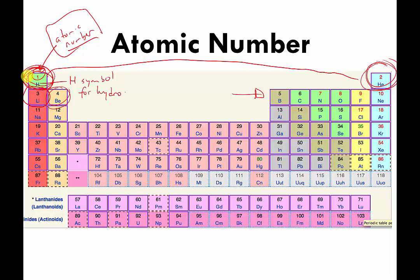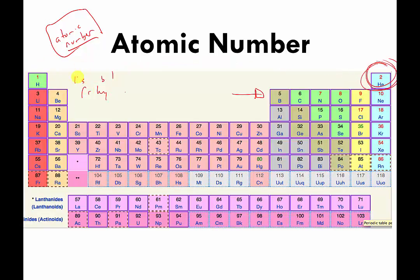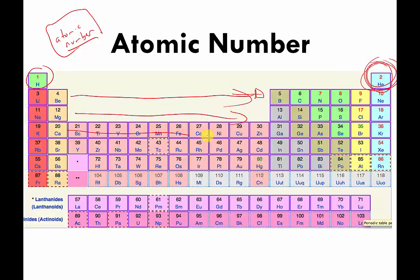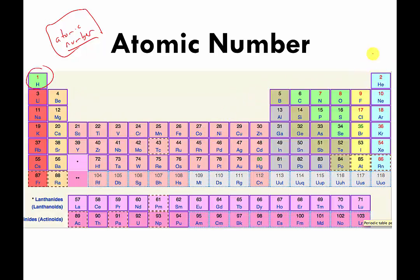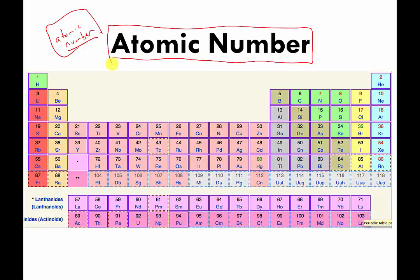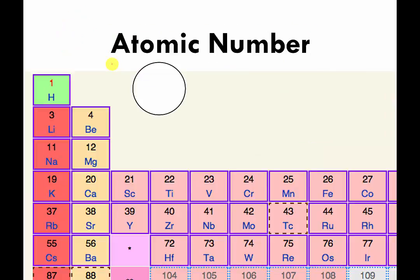The periodic table is arranged in order of the number of protons each element has, starting with one. Reading row after row, the numbers go up by one each time. That means each box has one more proton than the last one, or equivalently, each element has one higher atomic number than the previous one. So that's an introduction to atomic number.